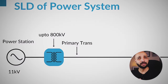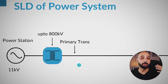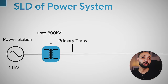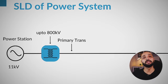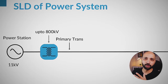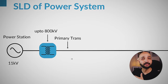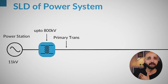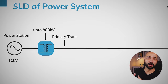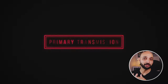The generating substation steps up the voltage to 145, 245, 400, or even 800kV. The voltage level depends on the distance the electricity needs to be transmitted — the higher the distance, the higher the voltage level. For example, if the distance is more than 200 kilometers, transmitting at 800kV or 420kV makes more sense than at 145kV. This transmission level is called primary transmission, covering voltage levels from 145 to 800kV.